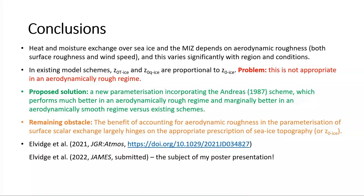In conclusion, heat and moisture exchange over sea ice in the marginal ice zone depends on aerodynamic roughness, which varies significantly with region and conditions. In existing model schemes, scalar roughness lengths are proportional to the momentum roughness length, but this is only appropriate in an aerodynamically smooth regime and is inappropriate in a rough regime. The proposed solution is a new parameterization blending the Andreas 1987 scheme with an ocean exchange scheme, which performs much better for aerodynamically rough conditions. A remaining obstacle is that the benefit of this scheme largely hinges on an appropriate prescription of the surface roughness length over consolidated sea ice — in operational models this value tends to be fixed, so this is a challenge for future work.